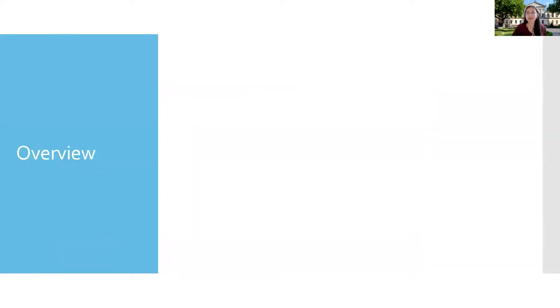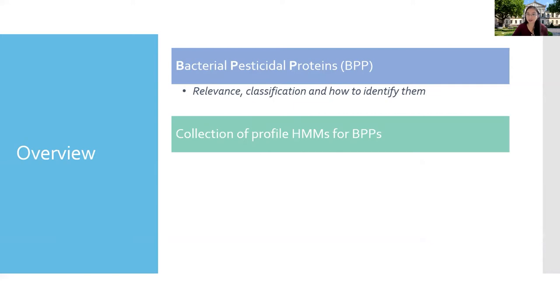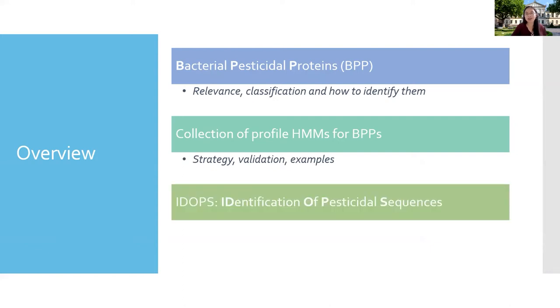So let me start my presentation. I would like to talk first about bacterial pesticide proteins, their relevance, classification, and hidden Markov models as an approach to identify them. The core of our tool is a collection of manually curated hidden Markov models. I would like to share with you the strategy behind them, their validation, and some examples. This model collection was implemented in a tool that we call IDOPS, Identification of Pesticidal Sequences, and here I will compare it to other similar tools, describe its unique features, and its workflow.